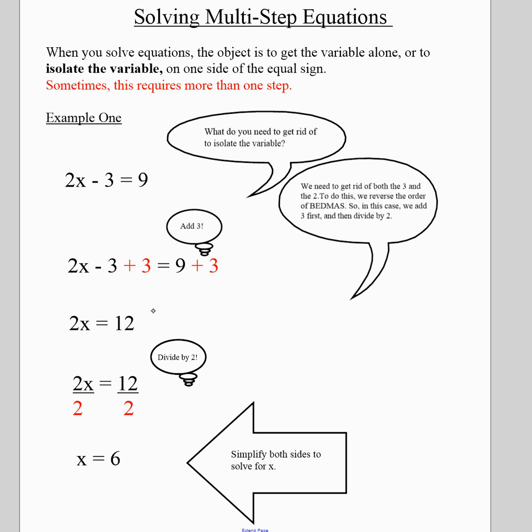You'll be left with 2x equals 12. This actually is an example of a simple equation. What you need to do is, how do you get x by itself? You divide both sides by 2, and your answer is 6.